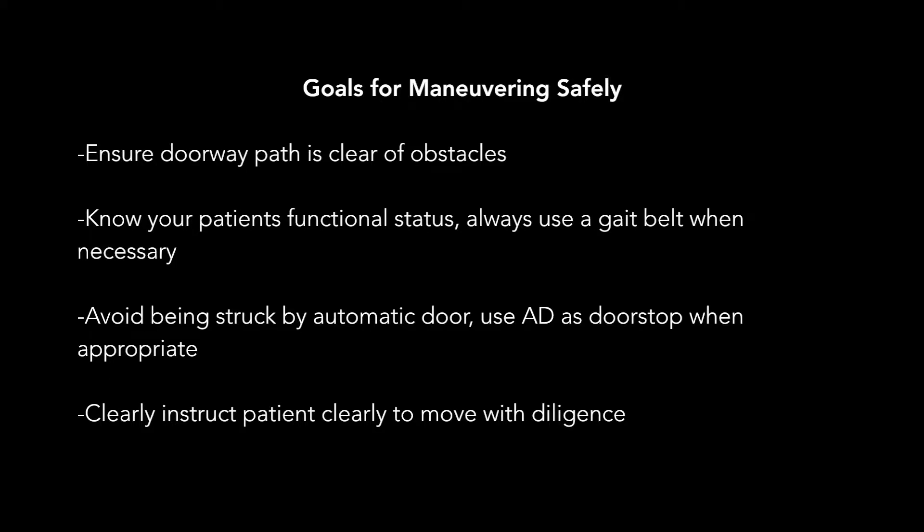Some goals for traversing an automatic door with an assistive device include checking the doorway configuration to ensure the doorway and the path beyond are clear of obstacles. Be aware of your patient's functional status and always use a gait belt when necessary. Avoid having your patient or yourself struck by the automatic door closing, as they can close swiftly and without warning. Use the tips of the assistive device and swing the door wider than minimal to progress through the doorway. Always clearly instruct your patient to move with diligence slowly, so as to maintain control of the assistive device and to maintain control of balance.